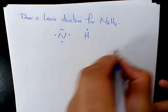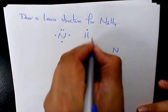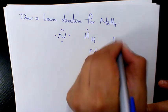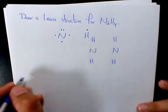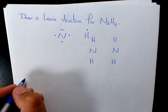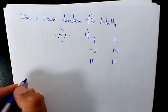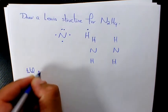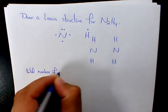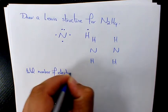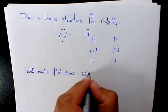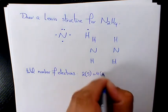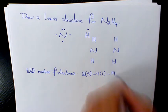What we need to do is arrange them: N, N, H, H, H, H. Then we need to add up the number of valence electrons available in each of these elements. This number represents the total number of electrons or dots you will need to draw in the structure. So total number of electrons is going to be 2 times 5 plus 4 times 1, that's 10 plus 4, which equals 14.